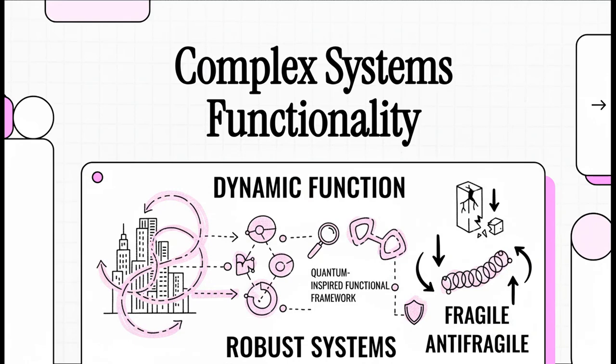We're surrounded by incredibly complex systems, everything from our own bodies to the power grids that light up our cities. But have you ever stopped to wonder, what's the secret sauce? What's the hidden rule that decides why some things can handle unbelievable stress while others just completely fall apart? Today, we're pulling back the curtain on that hidden layer. It's called functional resilience.